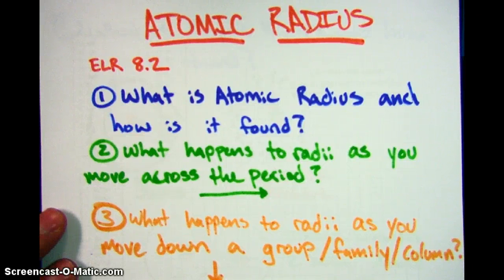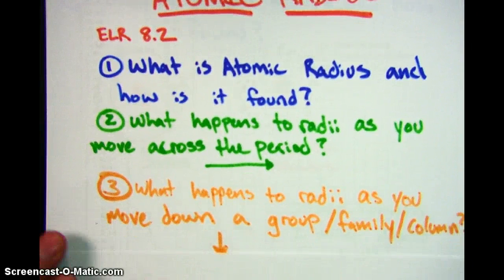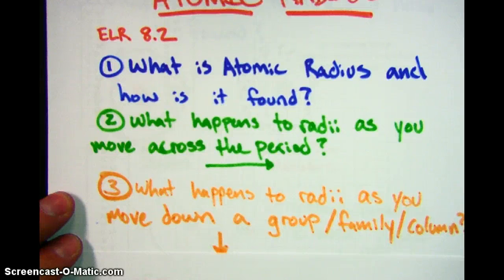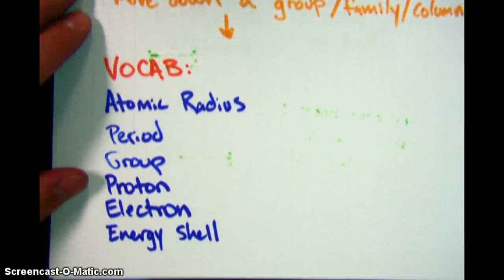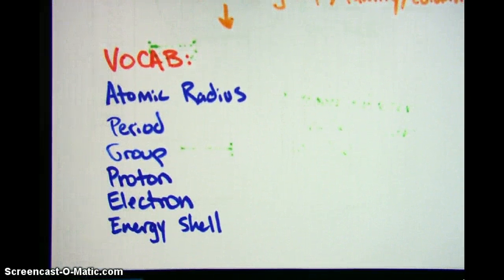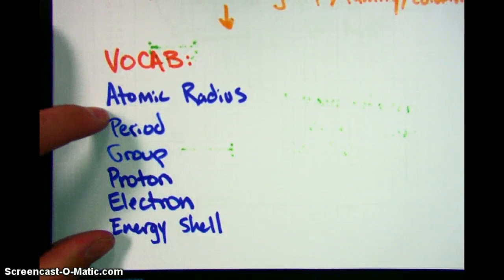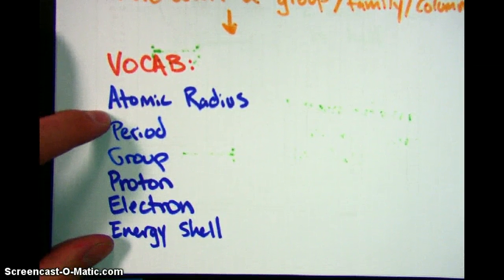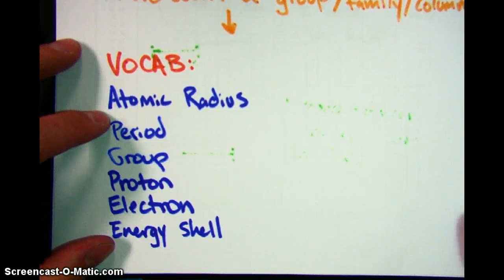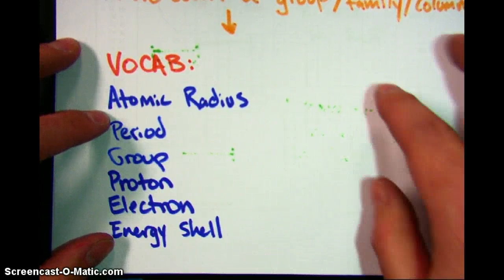Some of the vocab that you're going to need — this should be going in the vocab box on your week handout — are the following words: atomic radius, period, group, proton, electron, and energy shell. The last couple of words, or actually all but the first, are words that we've already talked about in class before, but you're going to hear all of these as we go.